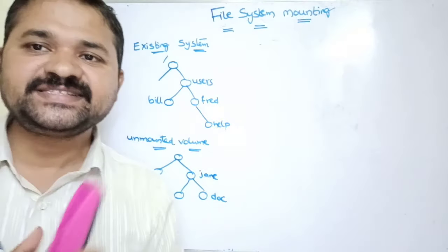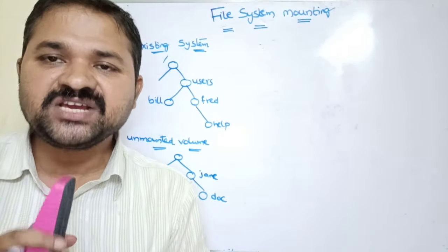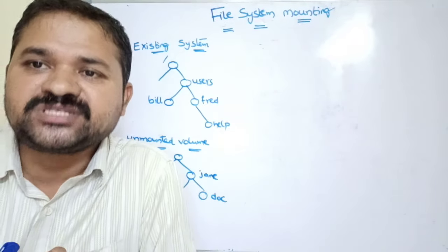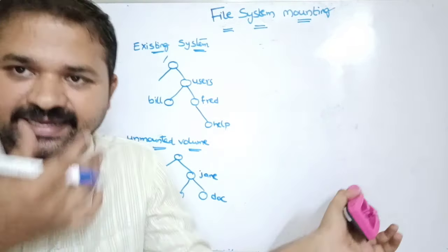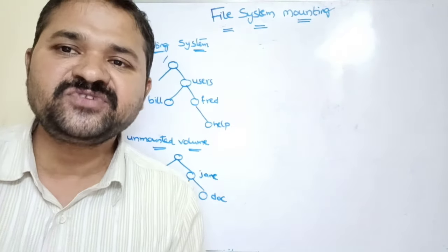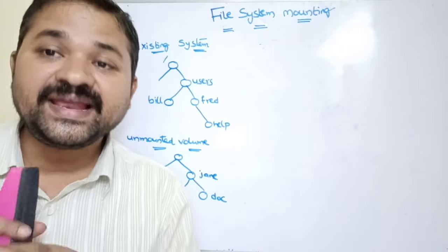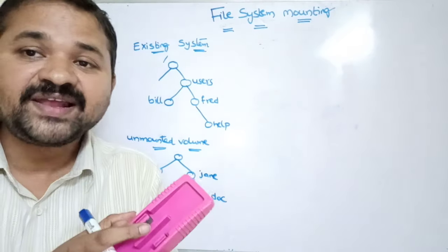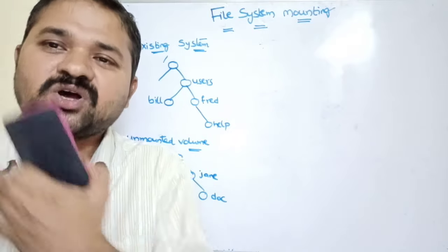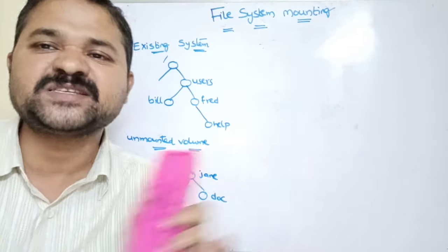Now let's see about file system mounting. Mounting means attaching files to the file system so that we can use those files at that file system. Mounting is the process by which the operating system makes files and directories available at a specific path, so that we can make use of all those files and directories at that specific path.